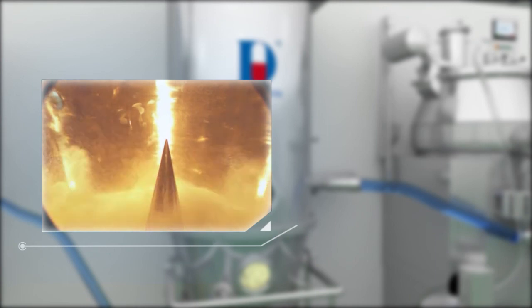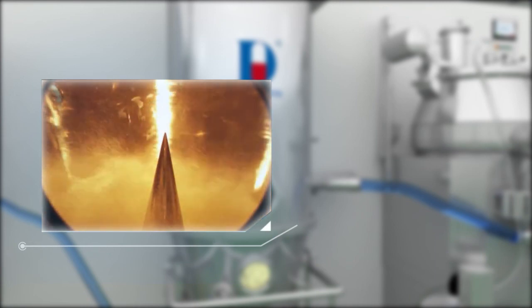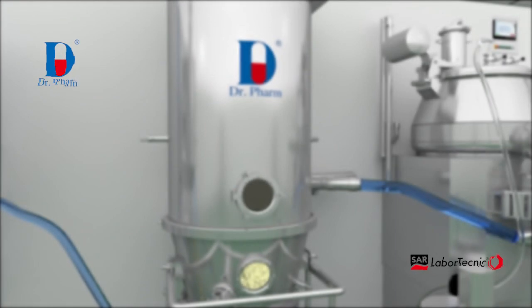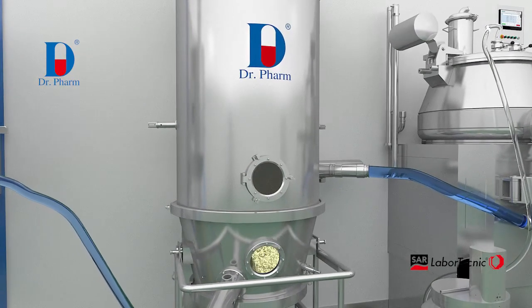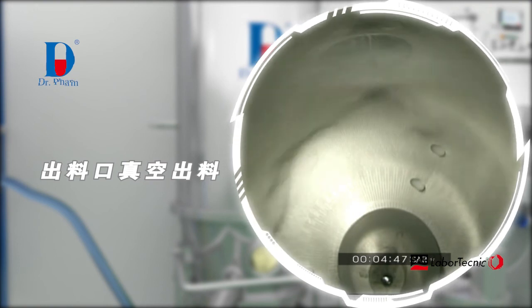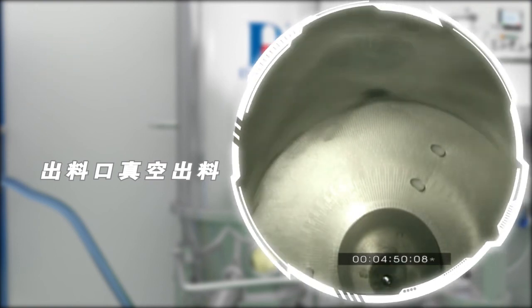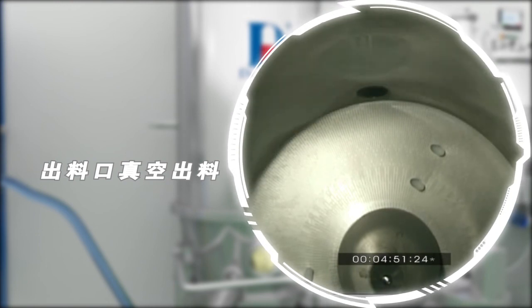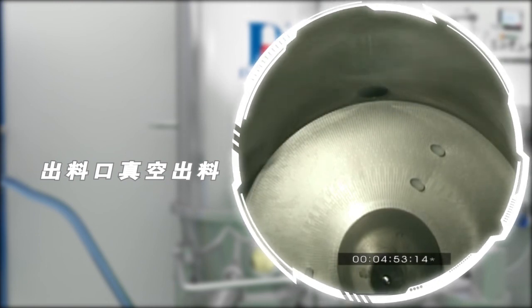When equipped with granulation function, the fluid bed is arranged with 45-degree spray guns to reduce the loss of the coating liquid. The higher capacity requirements for drying, granulating, and coating, the greater advantages fluid bed has, which can shorten the process time by multiple times.